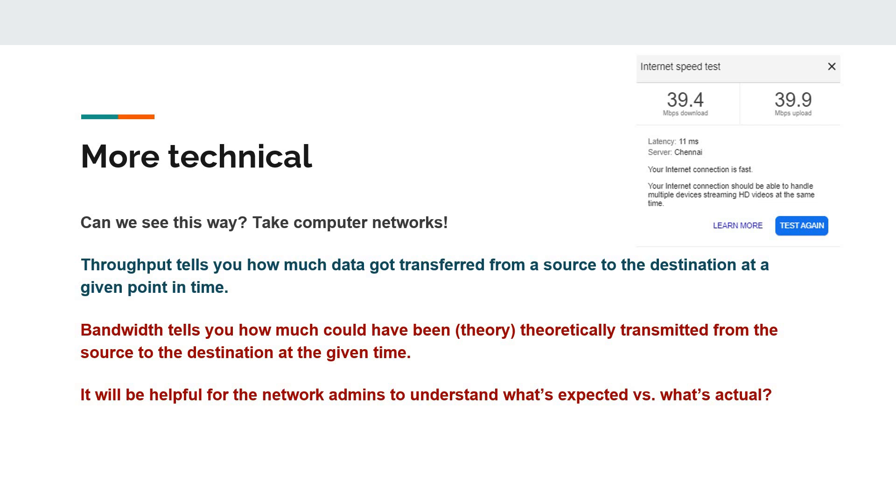Throughput tells you how much data you got transferred from the source to the destination at a given point in time. Bandwidth tells you how much exactly could have been transmitted from the source to the destination. What is the theoretical possibility is called bandwidth. What actually is achieved is called throughput.